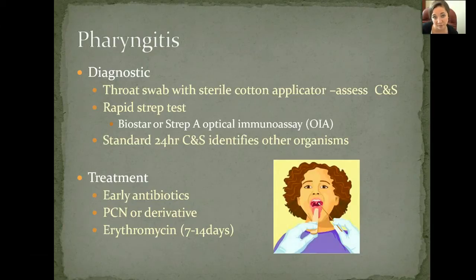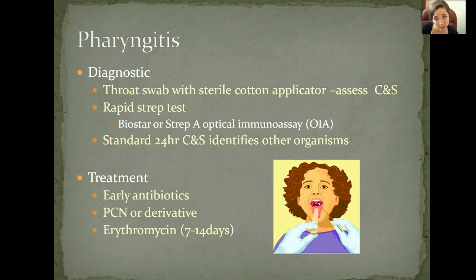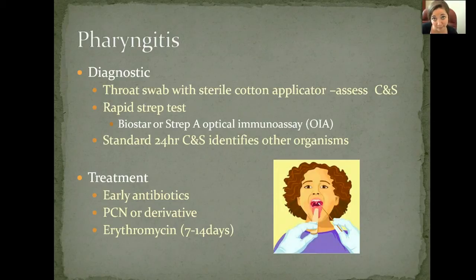Penicillin or a penicillin derivative is usually the gold standard antibiotic used for strep pharyngitis. If the patient is allergic to penicillin, we can put them on something else. Typically you'll see erythromycin prescribed for 7 to 14 days, which is longer than a typical Z-pack at 3 to 5 days. That extended duration is because we really want to make sure we're killing out the infection completely. It's so important as nurses to make sure patients take all of their antibiotics, because if they don't, the infection can come back stronger.